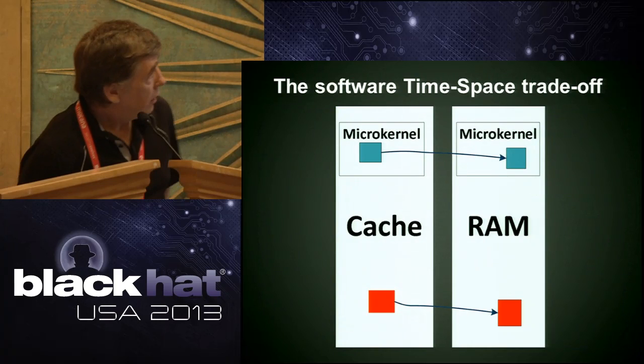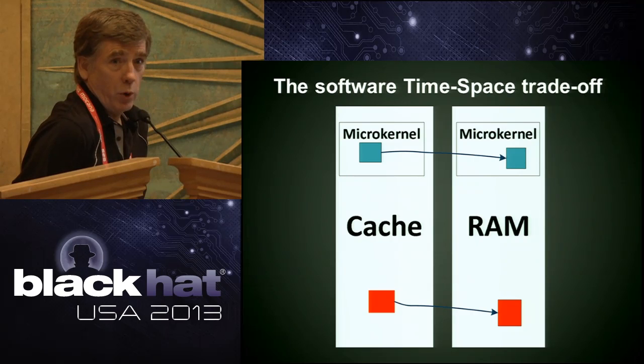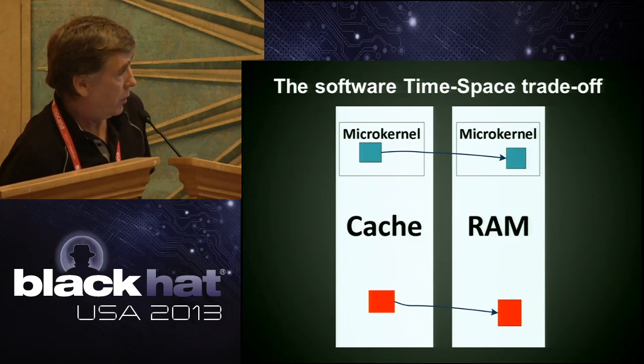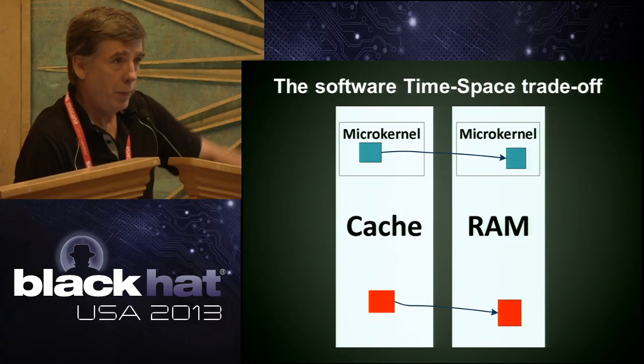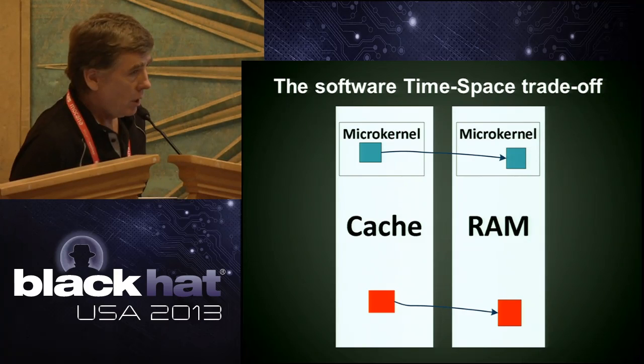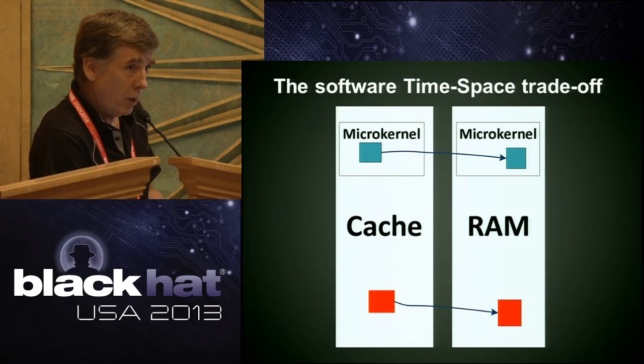This is the software space-time trade-off. The more memory you have, the faster your program can run. We have a microkernel that runs in main memory. Most systems have this memory hierarchy — cache and RAM. Cache is faster than RAM, and RAM is faster than flash or secondary storage. We can look at how much cache we have and use that as our vessel to measure volume — we're looking for the displacement caused by the presence of malware.